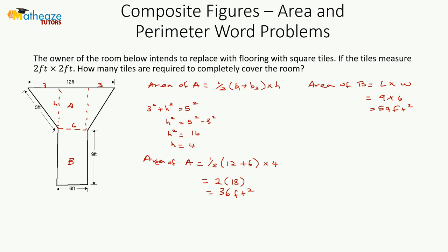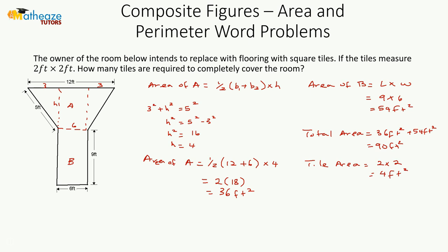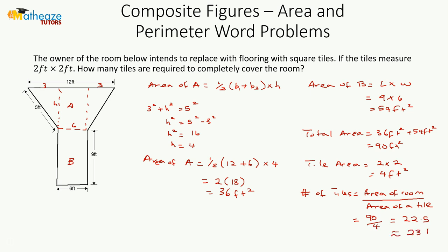Total area is 36 square feet plus 54 square feet, giving us 90 square feet. Each tile measures 2 by 2, so tile area equals 4 square feet. Number of tiles equals area of the room divided by area of one tile: 90 divided by 4 equals 22.5, which we round up to approximately 23 tiles.